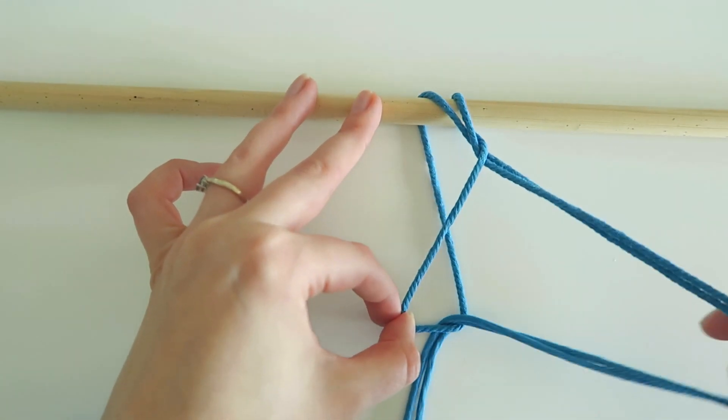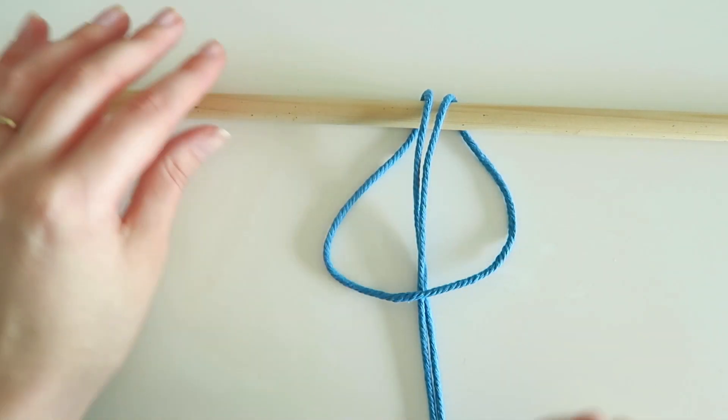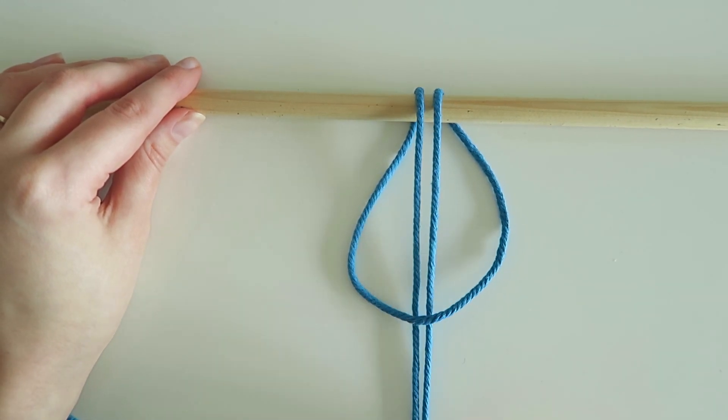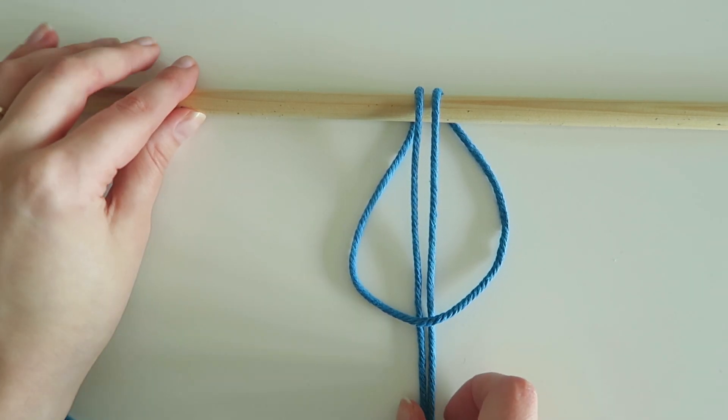I'm going to pull the strings all the way through like that and you'll be left with a shape that looks like this. Then what we're going to do is grab those two loose strings and just pull on them to tighten it up.